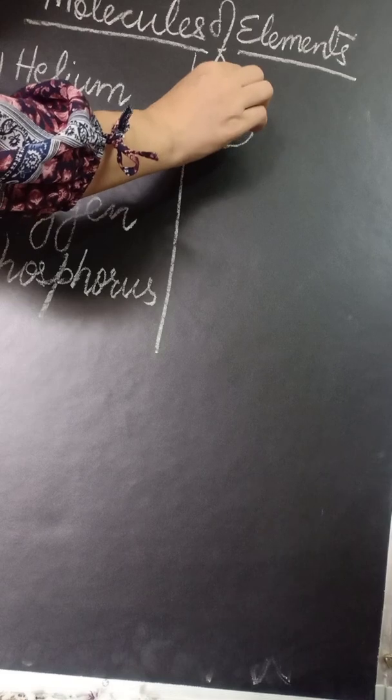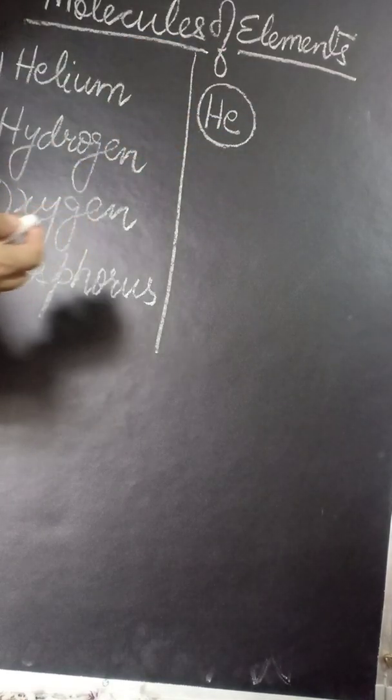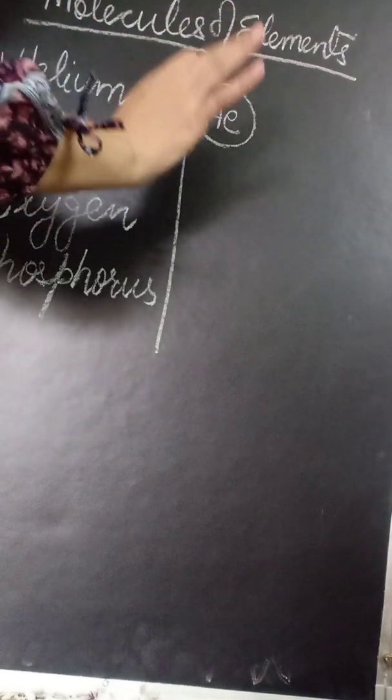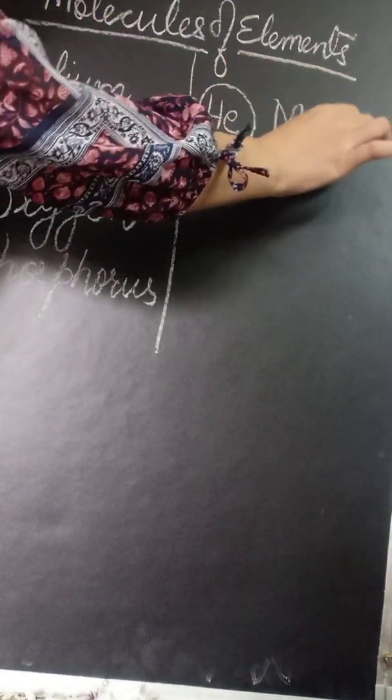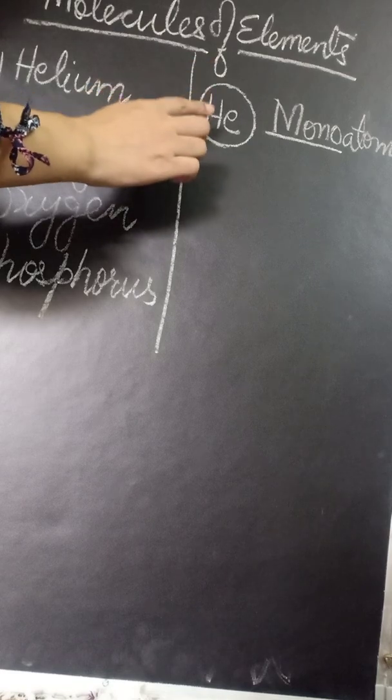So it makes a molecule of single atom of helium and we write it as He only and this is monoatomic. Monoatomic, mono means one. So there is only one atom in one molecule of helium.